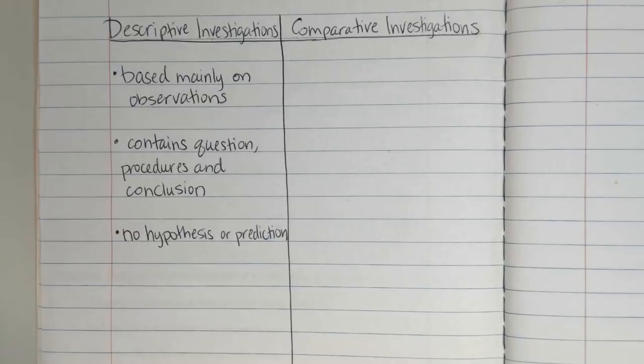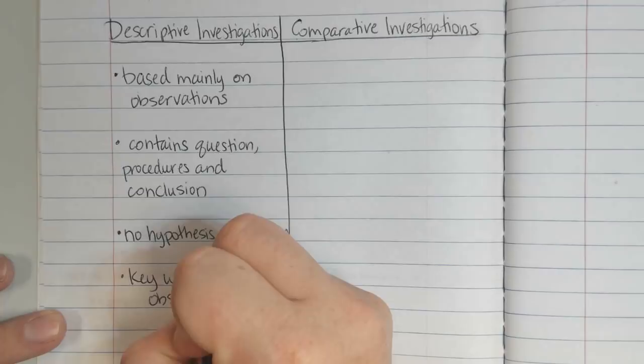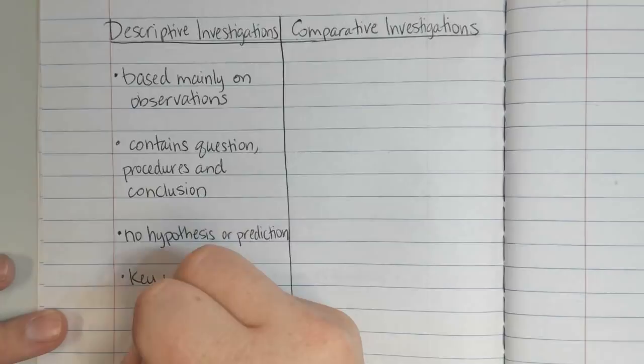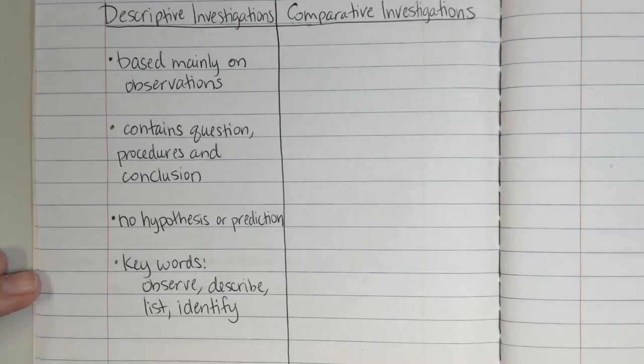When it comes to looking at different types of investigations and determining which type it is — say we give you an example and ask what type of investigation is this — there are some keywords that often go with descriptive investigations. Those include: observe, describe, and list.